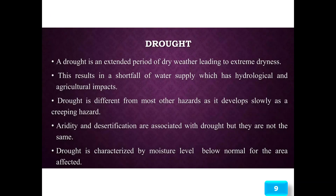Drought is an extended period of dry weather leading to extreme dryness, resulting in a shortfall of water supply which has hydrological and agricultural impacts. Drought is different from most other hazards as it develops slowly — it is a creeping hazard. Aridity and desertification are associated with drought but they are not the same. Drought is characterized by moisture levels below normal for the affected area.